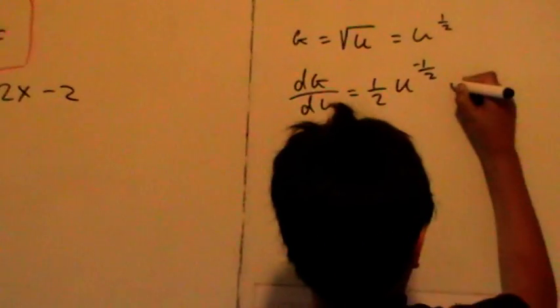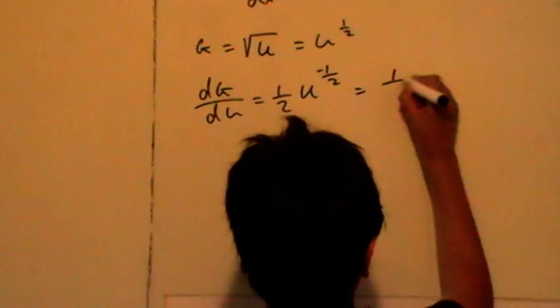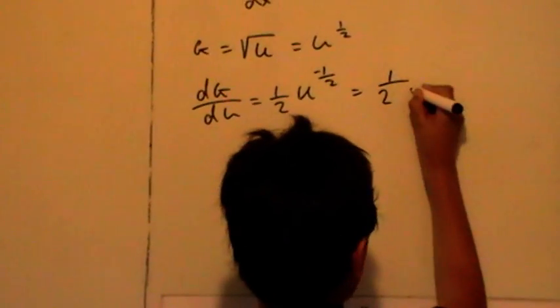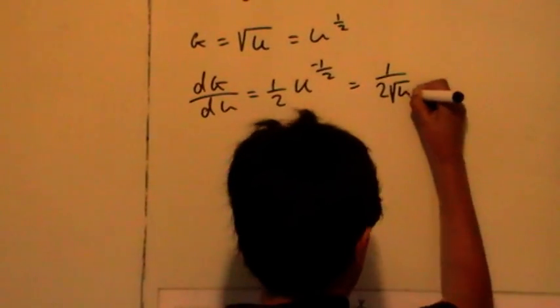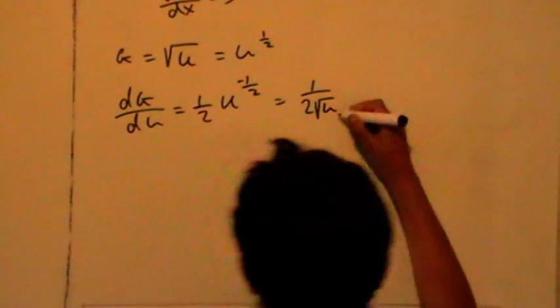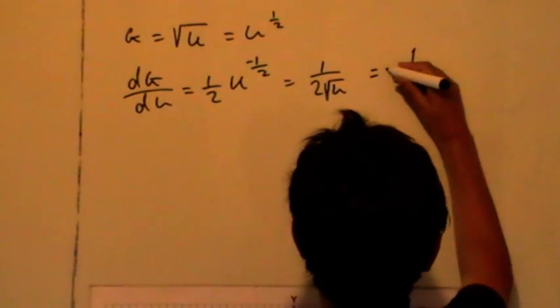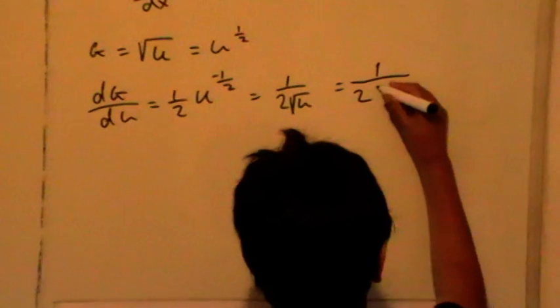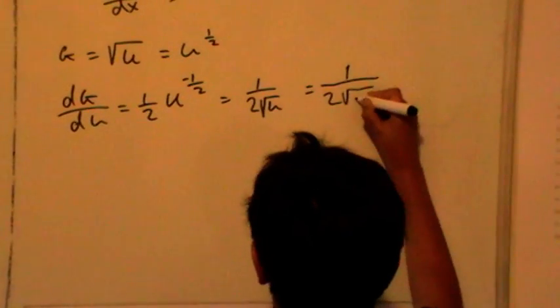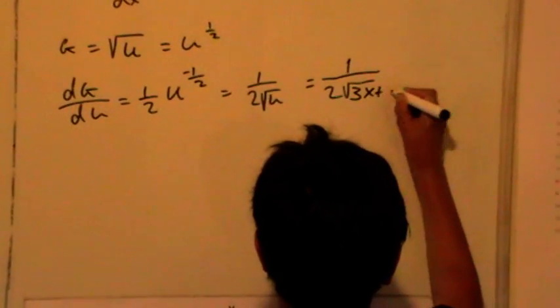That can be re-expressed as 1 over 2 root u. And that, when you substitute u in, you get 1 over 2 root 3x plus 2.